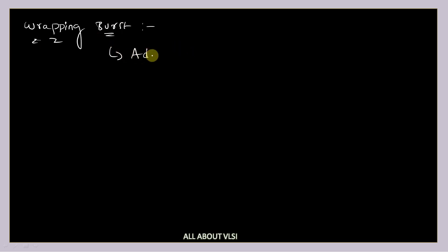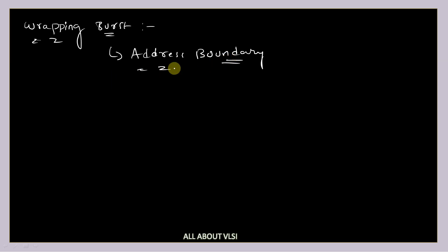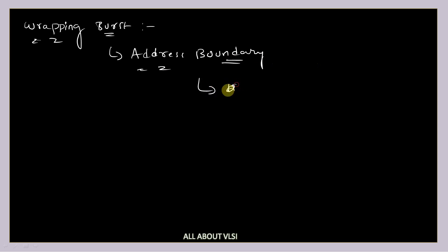Coming to wrapping burst, we need to first have a clear idea about one important thing — that is the address boundary. Why do we need to understand this address boundary? Because in the case of incremental burst, we simply increment our address and do not wrap back to the initial address. But here in the case of wrapping burst, you need to wrap back to the initial address after reaching your address boundary. This address boundary is calculated by size multiplied by length.